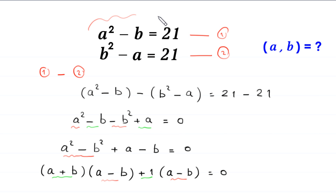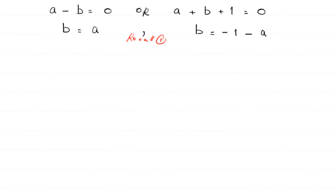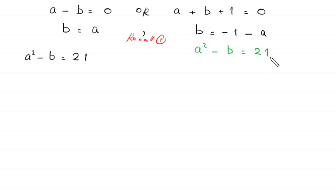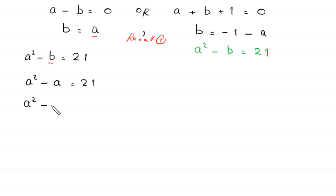Now we solve the first case where b equals a. Using equation one: a squared minus b equals 21. We replace b with a, giving a squared minus a equals 21. Moving 21 to the left-hand side: a squared minus a minus 21 equals zero.